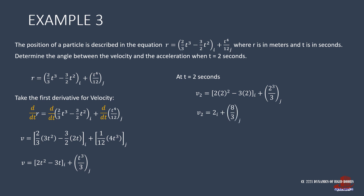From here, at t equal to 2 seconds the velocity components are used to take the angle of inclination of the velocity vector using inverse tangent of (8/3) over 2, giving 53.13 degrees.